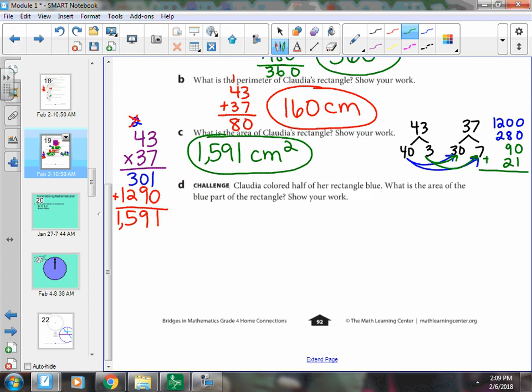And 3 times 7 would be 21. And I add them all together. I also get 1,591. Okay?